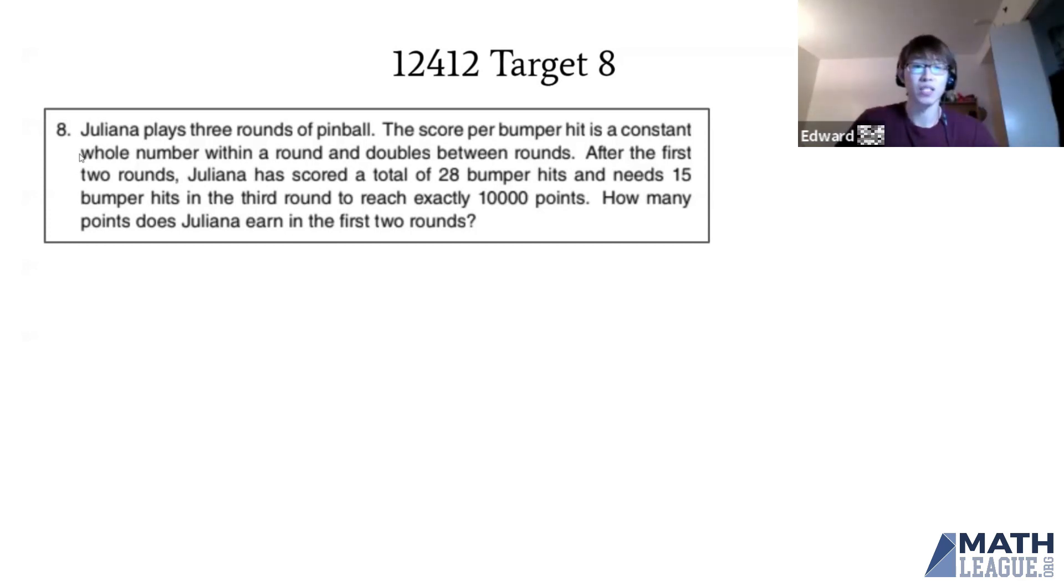The question reads: Juliana plays three rounds of pinball. The score per bumper hit is a constant whole number within a round and doubles between rounds. After the first two rounds, Juliana has scored a total of 28 bumper hits and needs 15 more bumper hits in the third round to reach exactly 10,000 points. How many points did Juliana earn in the first two rounds?